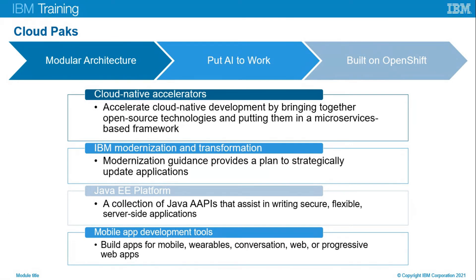The IBM Cloud Pack for Applications assists in modernizing existing applications and building new cloud-native applications. Tools include Cloud Native Accelerators, which accelerate cloud-native development by bringing together open source technologies in a microservices-based framework. IBM Modernization and Transformation provides modernization guidance with a plan to strategically update applications. The Java Enterprise Edition platform is a collection of Java APIs that assist in writing secure, flexible, server-side applications. Mobile app development tools allow building apps for mobile, wearables, conversation, web, and progressive web apps.